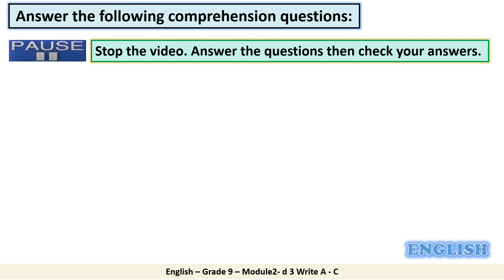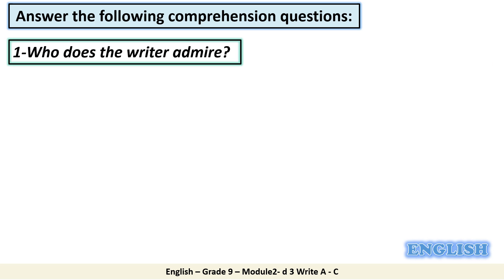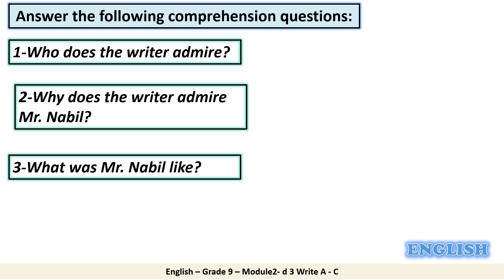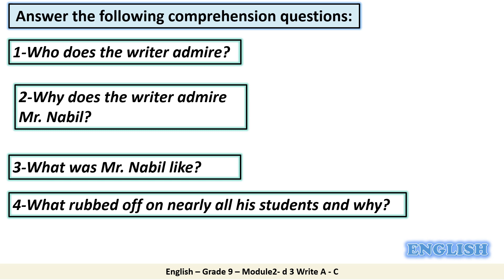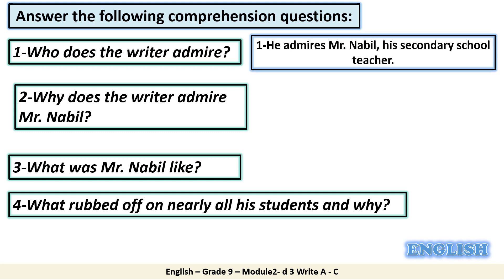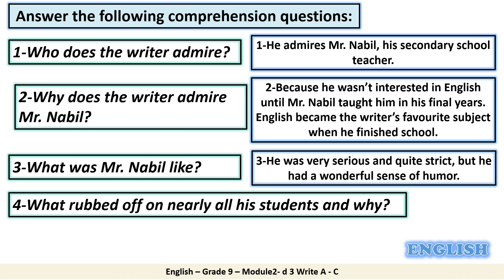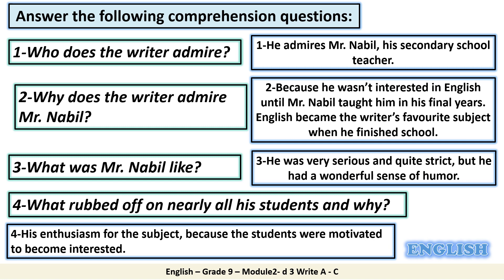Answer the following comprehension questions. Stop the video, answer the questions, then check your answers. Number 1: Who does the writer admire? Number 2: Why does the writer admire Mr. Nabeel? Number 3: What was Mr. Nabeel like? Number 4: What rubbed off on nearly all his students and why? Answers: 1. He admires Mr. Nabeel, his secondary school teacher. 2. Because he wasn't interested in English until Mr. Nabeel taught him in his final years; English became the writer's favourite subject when he finished school. 3. He was very serious and quite strict but he had a wonderful sense of humour. 4. His enthusiasm for the subject, because the students were motivated to become interested.